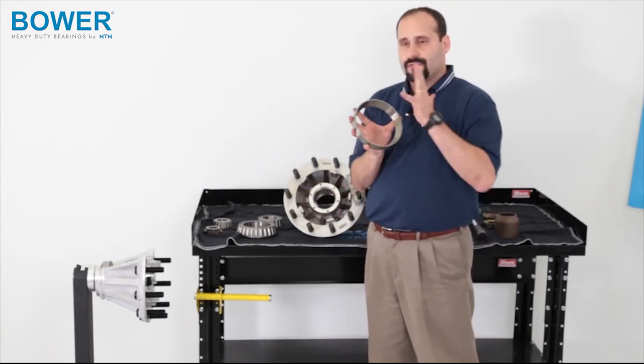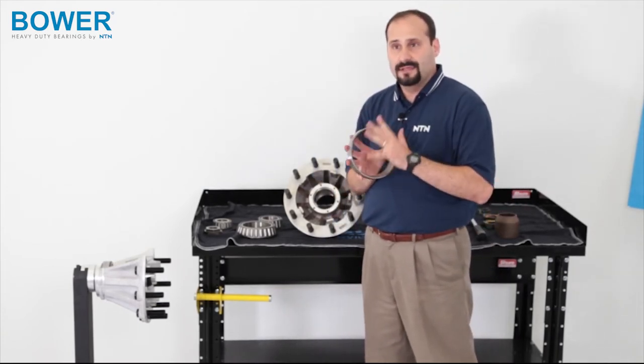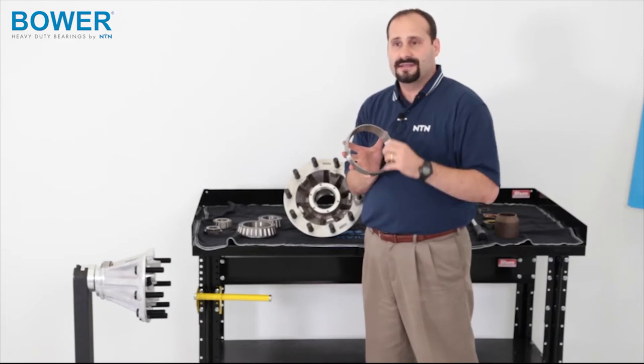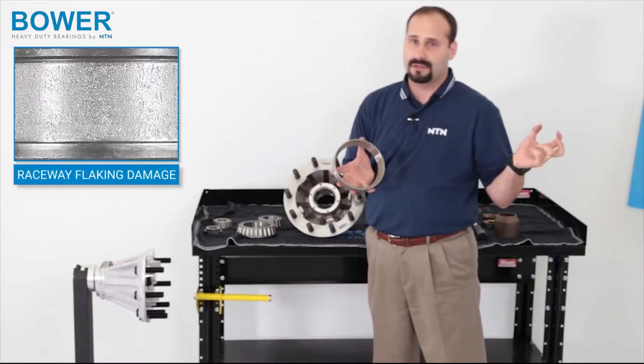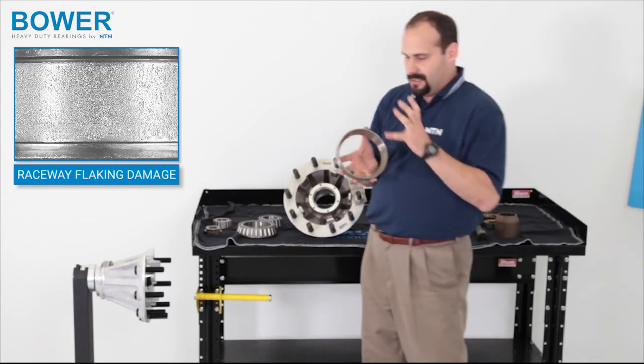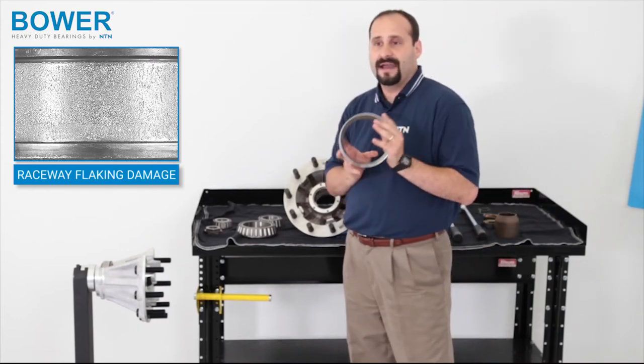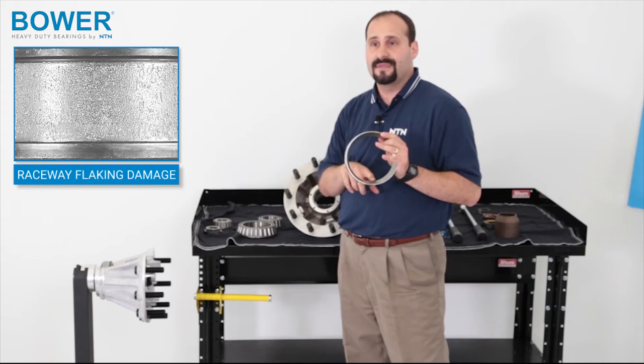Our standard is, even though the race looks good, a failure mode in bearings is called flaking, where a piece of this raceway will come off and it'll look like a pothole on the road. This race can look perfectly fine and you can be a couple hundred miles away from that flaking happening.